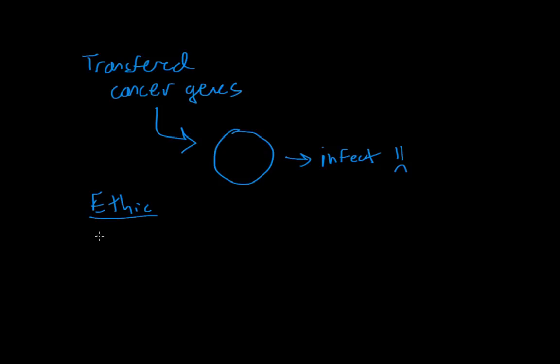And if we drag it out further, what if an individual is perfectly normal genetically? Is it okay if we put in genes that make them smarter or faster? What are the ethics surrounding that? Those are some ethical issues around genetic modification.